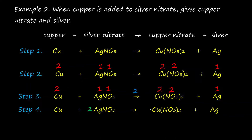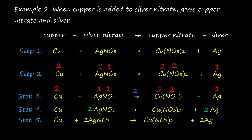Then 2 divided by 2 equals 1 for copper nitrate, and also 2 divided by 2 for nitrate equals 1 — no need to write 1 as a coefficient. For silver: 2 divided by 1 equals 2. The fifth step is to check the equation is balanced. In the reactant side, 1 copper atom is present; in the product side, 1 copper is present. For silver: 2 silver on the reactant side, and 2 silver atoms on the product side. For nitrate: 2 on the reactant side and 2 on the product side. The reaction is balanced.